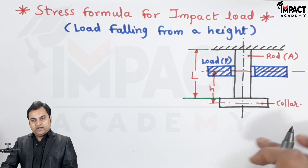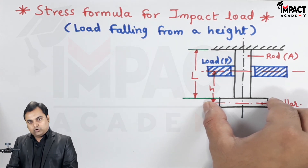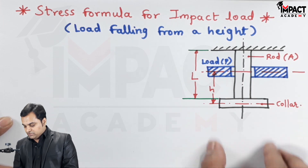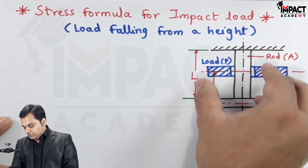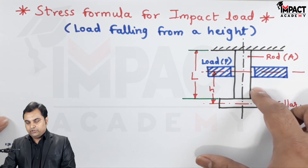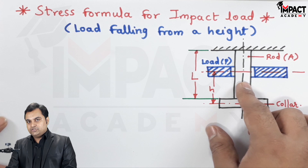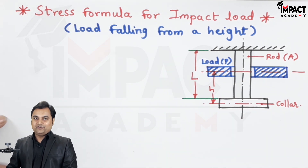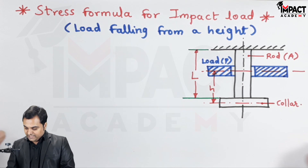When this load falls from the height, it would try to pull the collar in the downward direction. Because of this, the collar gets extended and it will try to pull the rod along with it. So there would be deflection in the rod, and because of that there would be energy stored — that stored energy is called the strain energy. Here I'll draw the deflected diagram.